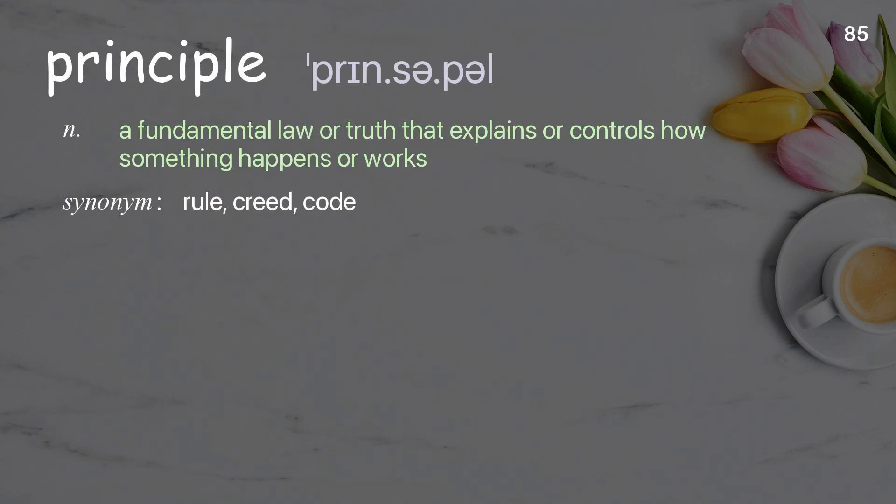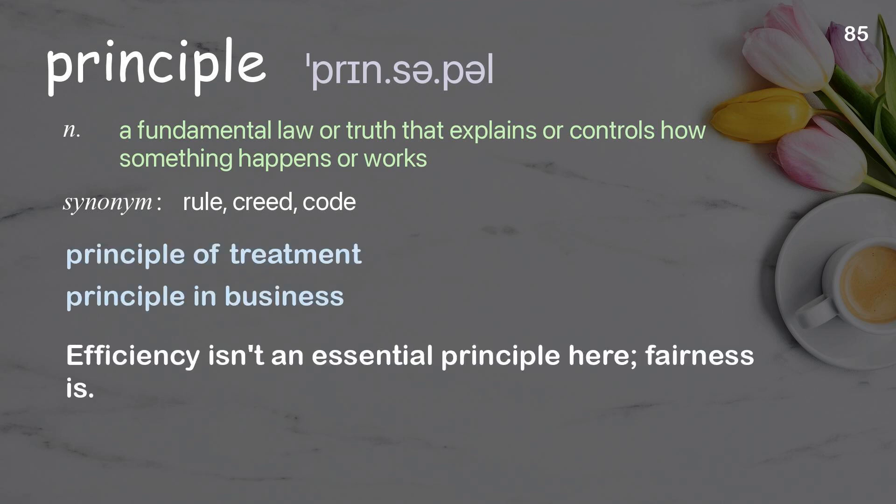Principle: A fundamental law or truth that explains or controls how something happens or works. Examples: Principle of treatment. Principle in business. Efficiency isn't an essential principle here. Fairness is.